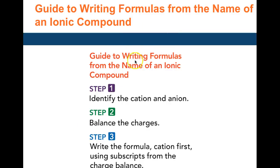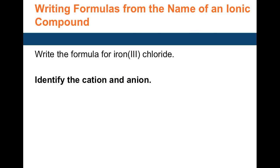When writing formulas from the name of an ionic compound, identify the cation and anion and make sure the charges are balanced. For example, iron(III) chloride — the cation is Fe3+ and the anion is Cl−. Chloride is 1−, iron is 3+, so you need three chlorides to balance the 3+ charge: FeCl3.